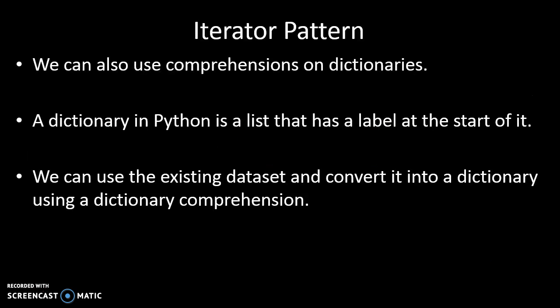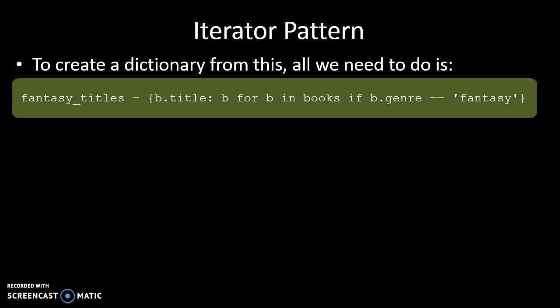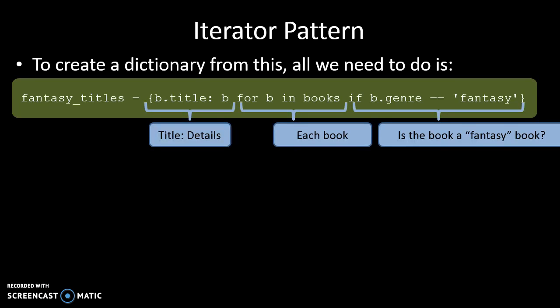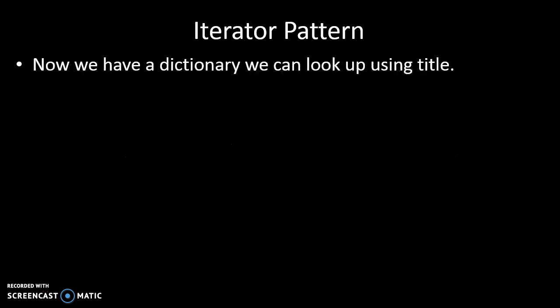A dictionary comprehension is similar, except a dictionary has a label at the start of each term. Using the same list of authors, we can say: give me the fantasy titles plus all the details of each book for each book where the genre is fantasy. That gives a dictionary of authors we can search, which is great. Thanks very much.